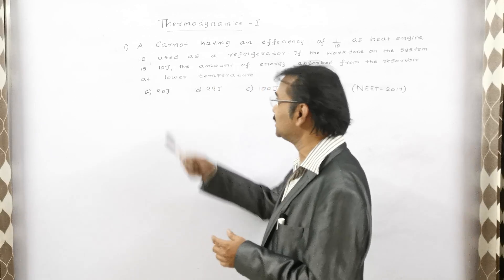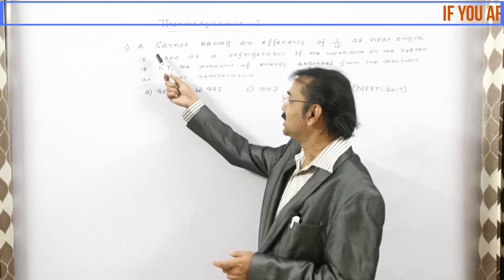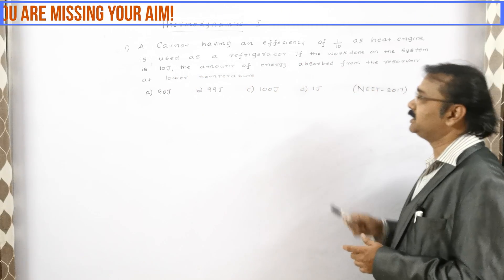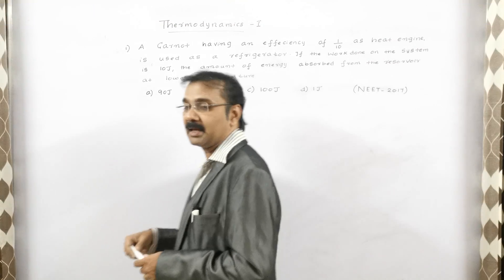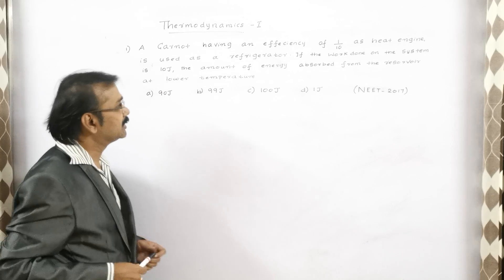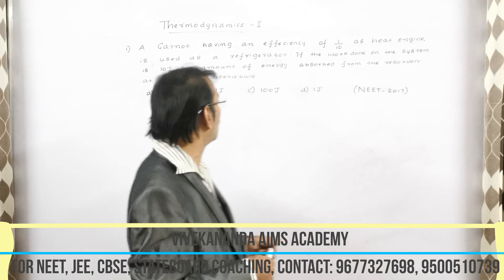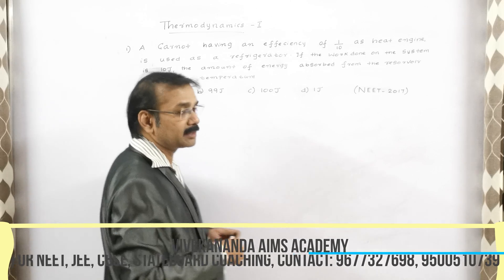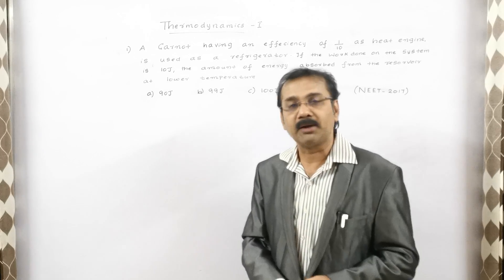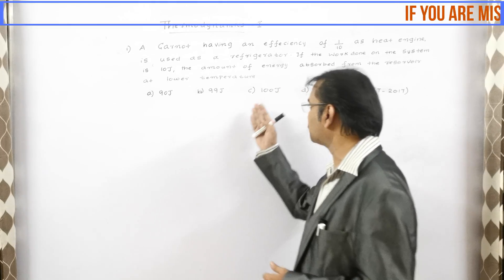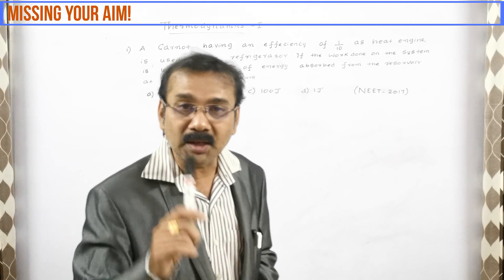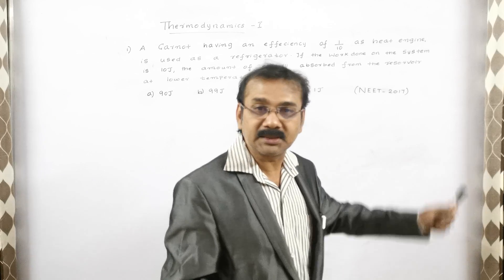Now let us go for the session — the lesson of Thermodynamics. A Carnot engine having an efficiency of 1 by 10, used as a heat engine, is now used as a refrigerant engine. If the work done on the system is 10 units, find the amount of energy absorbed at the lower temperature. The options are: A) 90 joules, B) 99, C) 100, D) 1 joule.